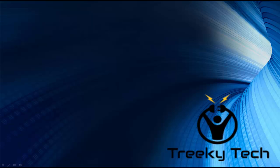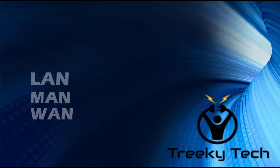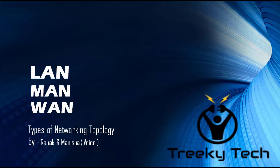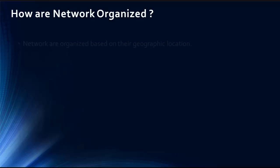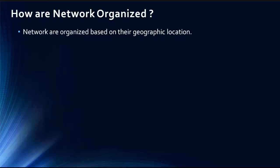In this video, we will be discussing about LAN, MAN and WAN. We have already discussed about networks in our previous video. A network is where some devices are connected to each other with a physical medium such as wire or radio signal to communicate between those devices. Now we are coming to how these networks are organized. Based on their geographical location, the networks are divided into different types of categories. LAN and WAN are most popular among them.